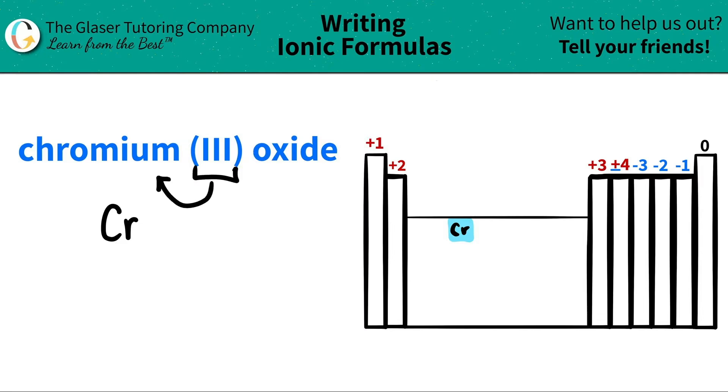The Roman numeral, remember, always tells us the charge of the metal. So in this case, this is a Roman numeral 3, so I'm just going to say it's a +3. I know that this is a plus and not a negative because all metals have positive charges. They want to lose electrons.